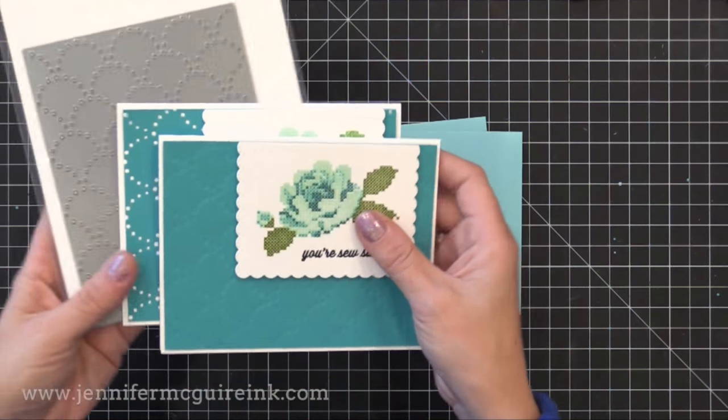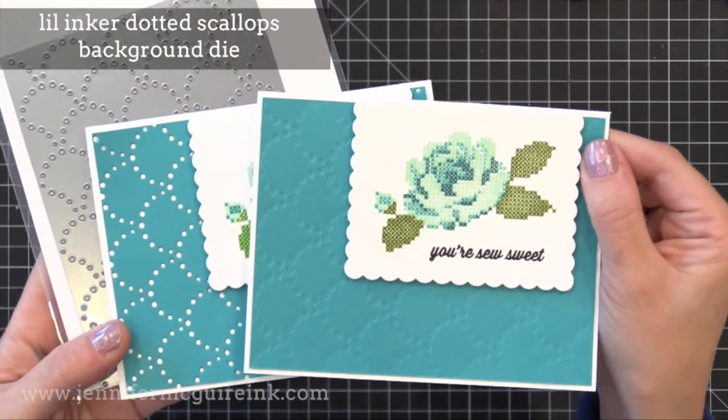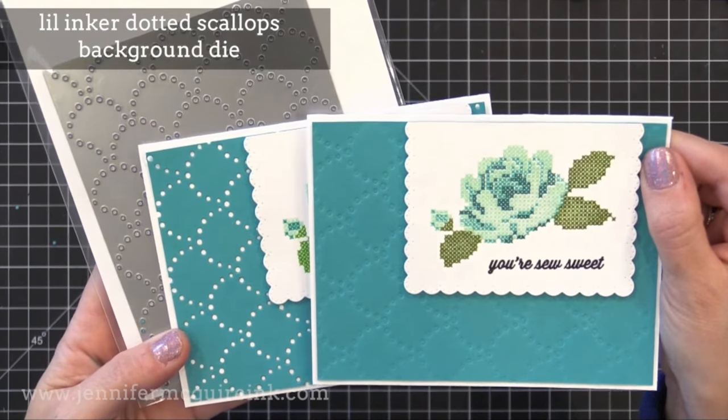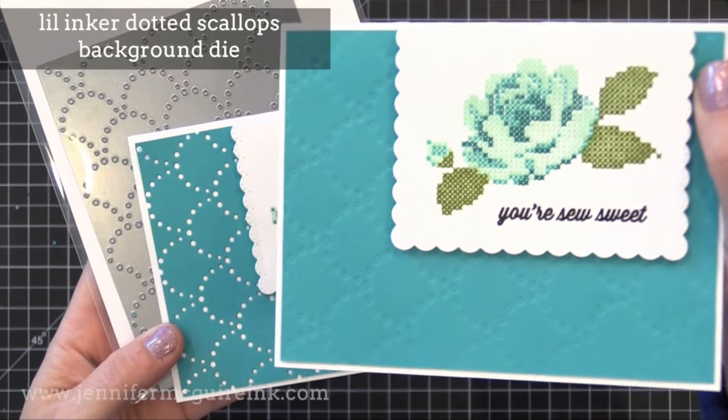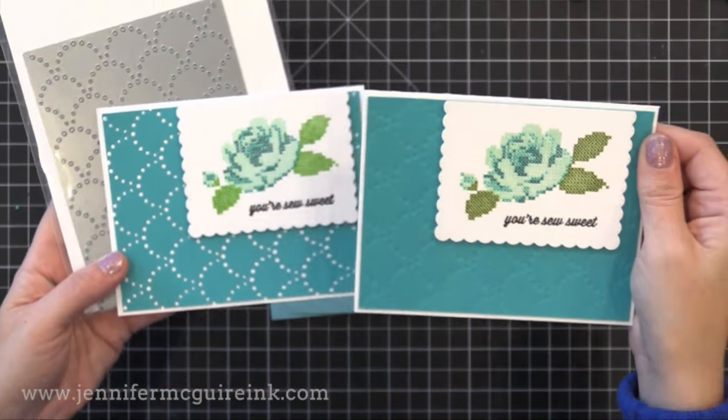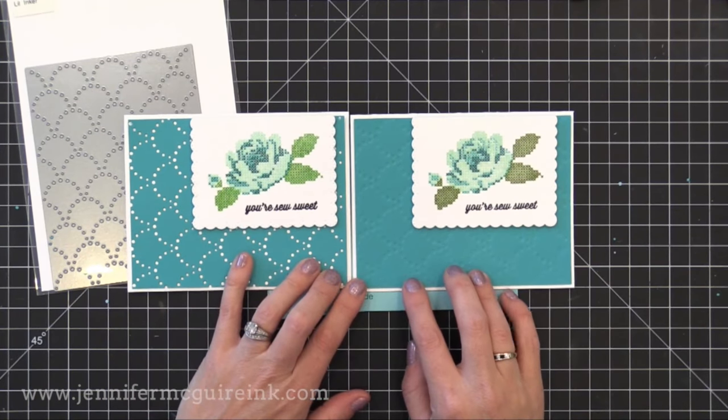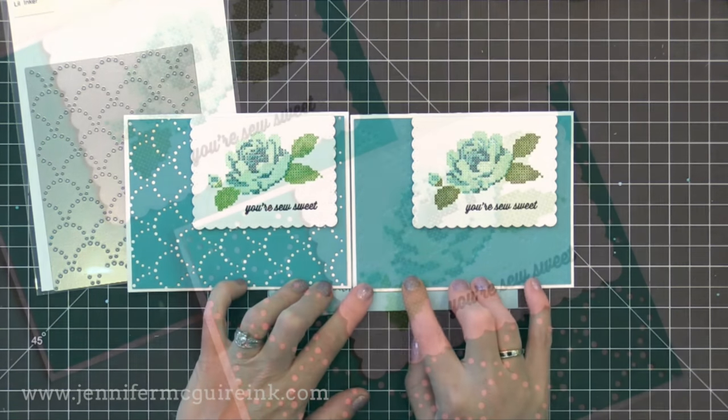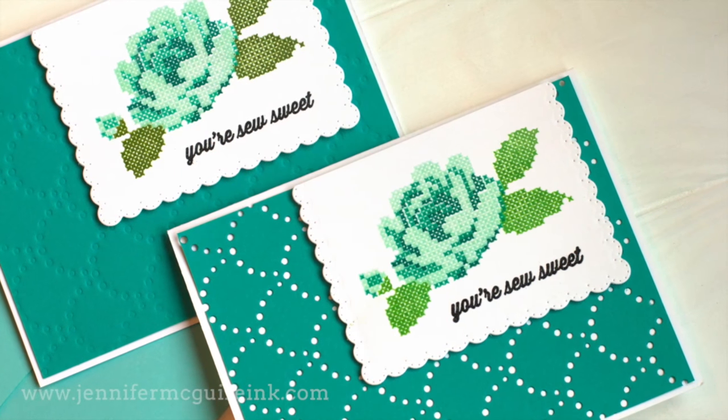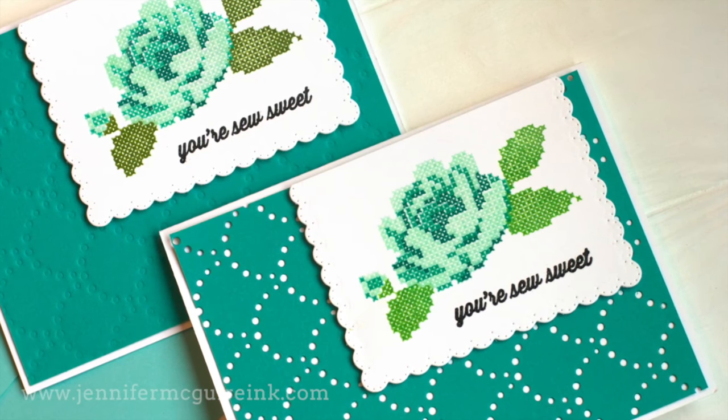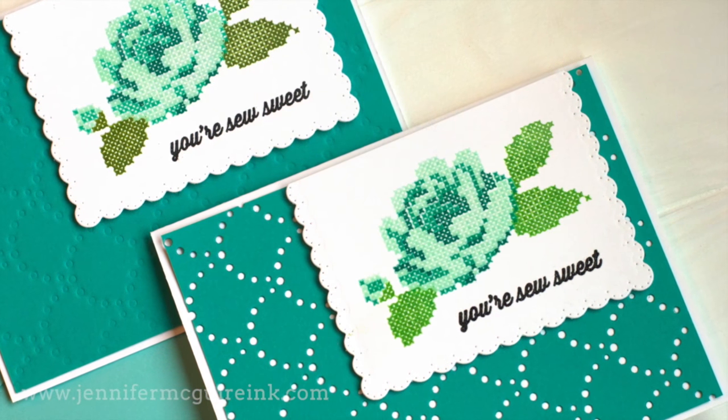And by the way, remember, you can use any inks for this technique, any inks that you may have. Now here are those backgrounds that I created earlier with the Little Inker Dotted Scallops background die. On the left is if you cut it. On the right is if you just make an impression with an embossing mat. So there are a bunch of examples for you of using the faux colored embossing technique and also using background dies creatively.